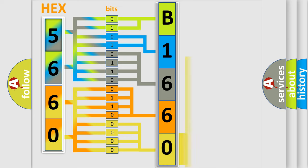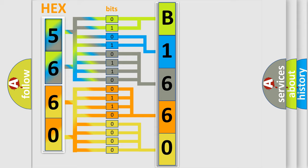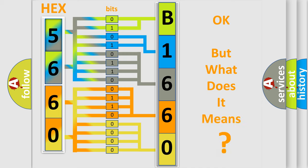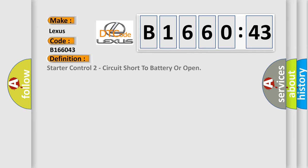A single byte conceals 256 possible combinations. We now know in what way the diagnostic tool translates the received information into a more comprehensible format. The number itself does not make sense to us if we cannot assign information about what it actually expresses. So, what does the diagnostic trouble code B166043 interpret specifically for Lexus car manufacturers? The basic definition is: starter control two circuit — short to battery or open.